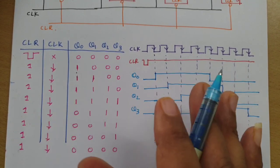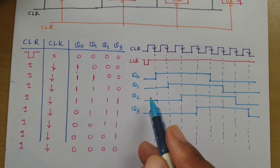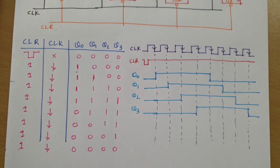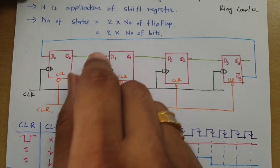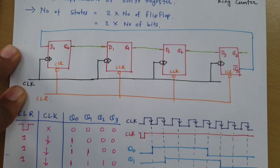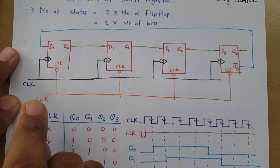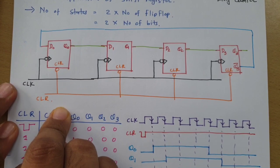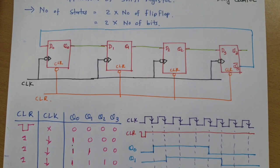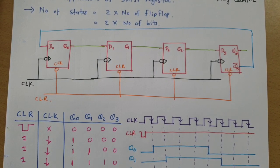In a ring counter there were only four states, while Johnson counter produces eight — double the states. There are two advantages of Johnson counter: first, it has double the number of states compared to a ring counter; second, we do not need an overriding input which is required in a ring counter. I hope you have understood this video. Thank you for watching — please do give your valuable suggestions.